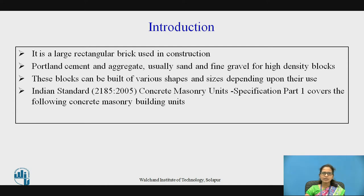It is a large rectangular brick which is used in construction. Generally they are made up of cast concrete, that is Portland cement and aggregate — usually sand and fine gravel for high density blocks. Even lower density blocks may use industrial waste as an aggregate. These blocks can be built in various shapes and sizes depending upon their use.